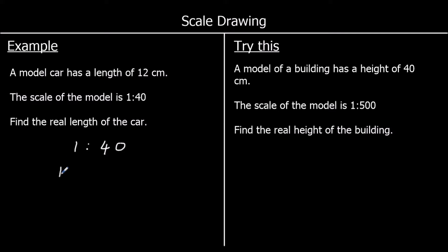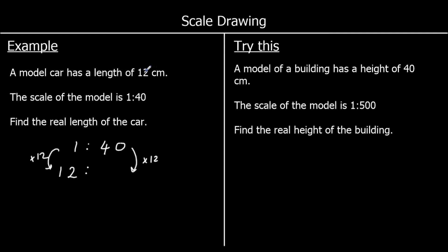For the length of the car there's 12 cm on the model. We need to find the equivalent ratio — what is that in real life? To go from 1 to 12 we multiply by 12, so we need to do 40 times 12. For every 1 cm there are 40 cm, and we've got 12 cm, so it's 12 times 40.